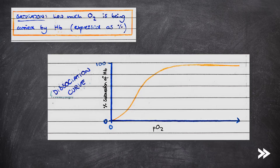Next we need to know the oxyhaemoglobin dissociation curve. Note that saturation is how much oxygen is being carried by haemoglobin, expressed as a percentage — so the more saturated haemoglobin is, the more oxygen it is carrying.